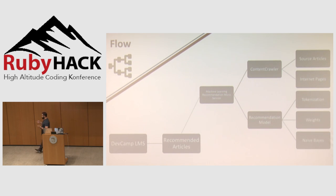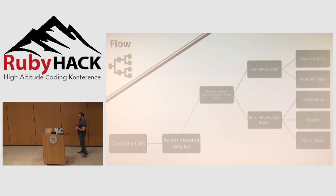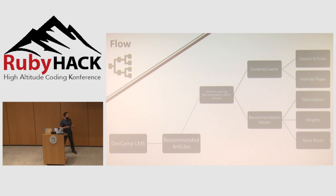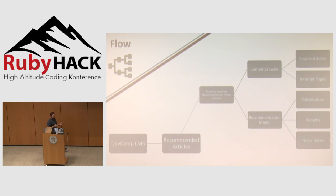When I'm building out some type of code project, after figuring out the main objective, the next thing I like to do is build out wireframes — the architecture and all the components I need for the system. So what we're going to be discussing are all of these components. In that diagram, you can see that we have the DevCamp learning management system. That's where all of the recommendation articles are right now, and that's where they're rendered.